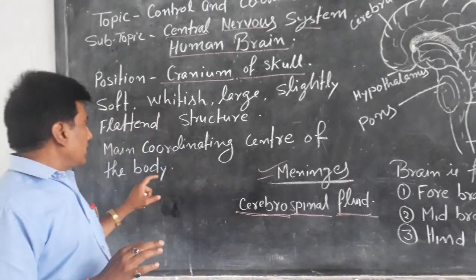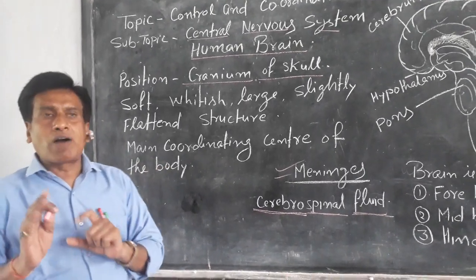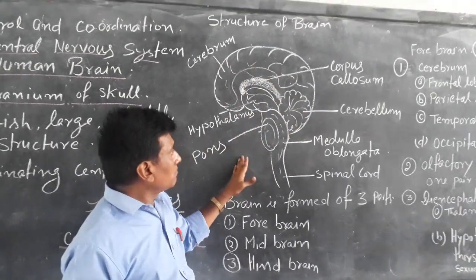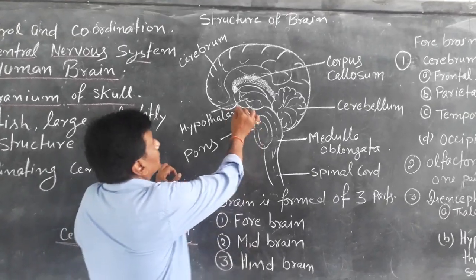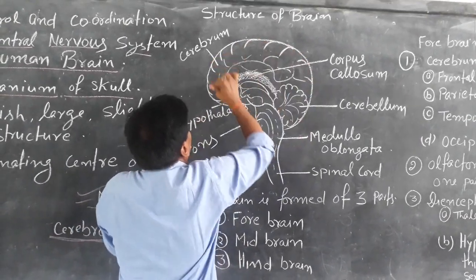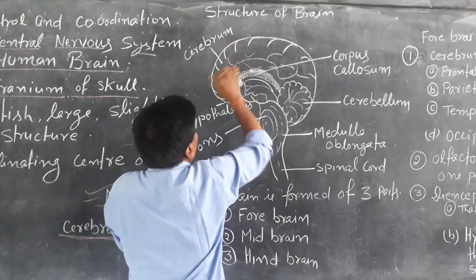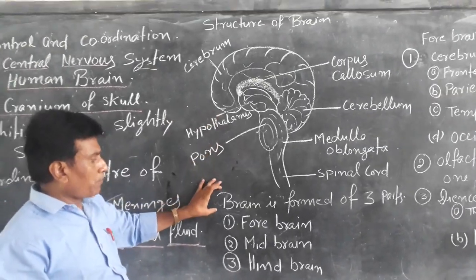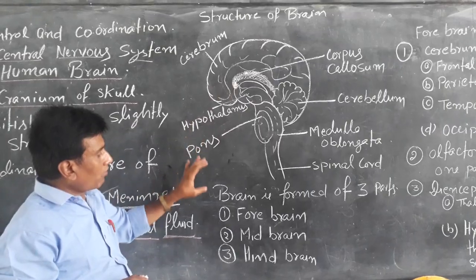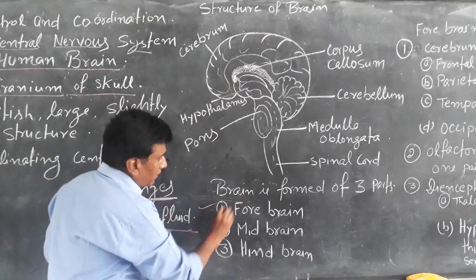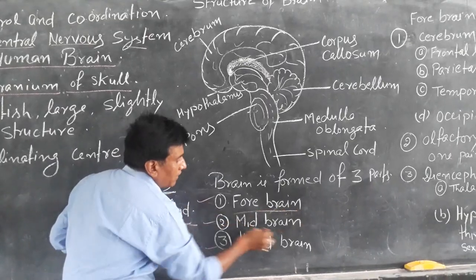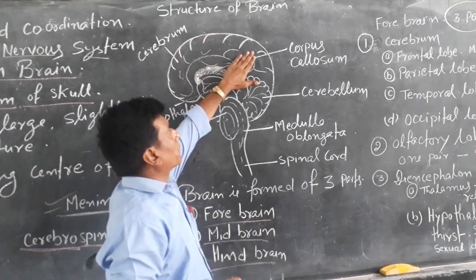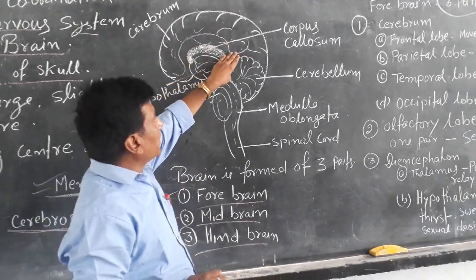The brain is the main coordinating center of our body. This is the structure of the human brain. The whole brain is divided into three parts: the first part is called forebrain, the second is midbrain, and the third is hindbrain.